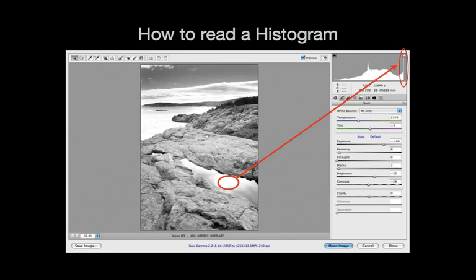The spike on the right-hand side of the histogram indicates loss of highlight detail in your image. In other words, when you try to print the image, there will be areas of white without detail in the light areas of the frame.